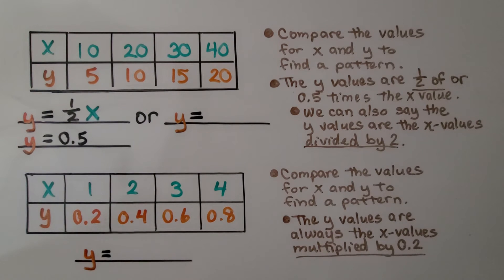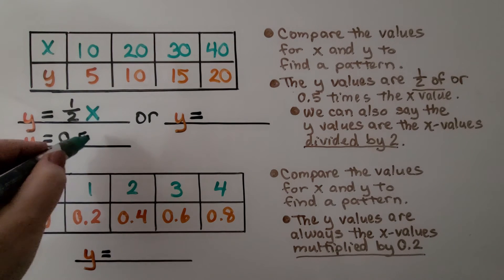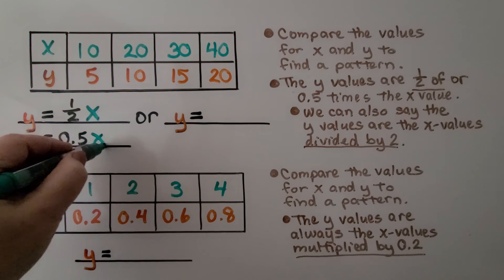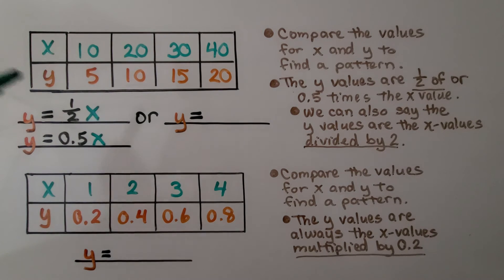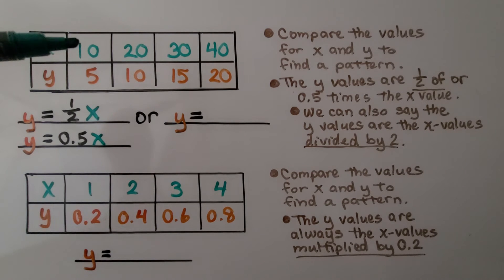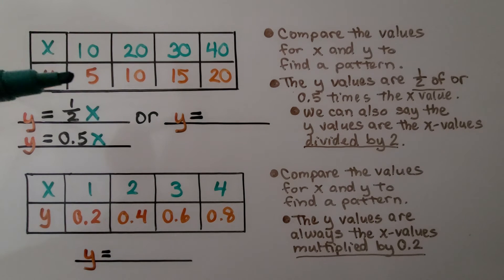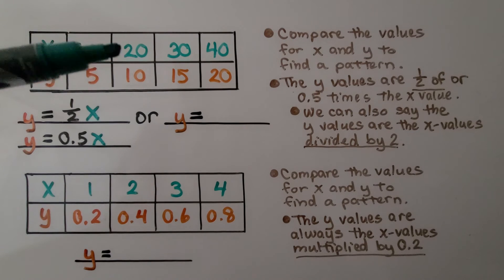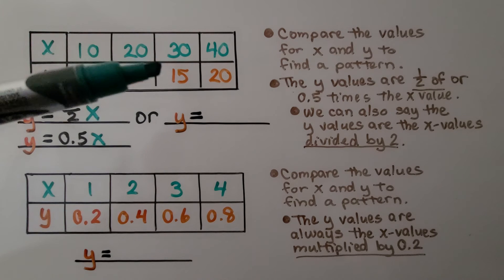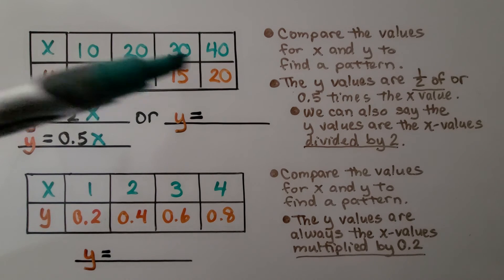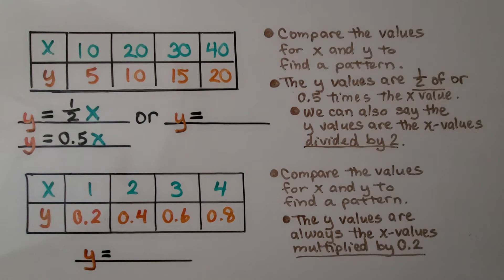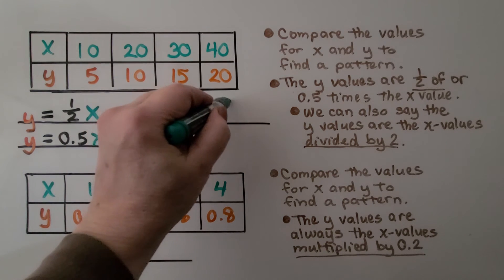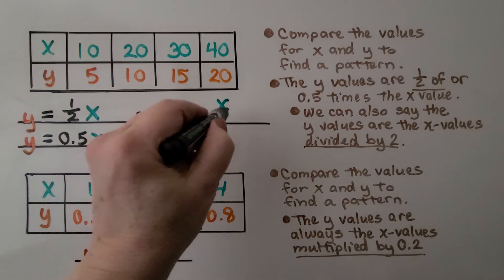We can also look at this as: take the x value and divide it by 2. 10 divided by 2 is 5, 20 divided by 2 is 10, 30 divided by 2 is 15, and 40 divided by 2 is 20. So we can say the y values are the x values divided by 2.